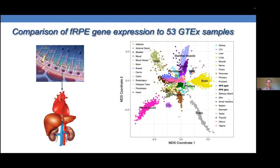Much to my surprise, the RPE falls between the brain and cardiac muscle. I wonder how many people would have predicted that. I think this is telling us something about the importance of mitochondrial electron transport to the RPE that I hadn't thought of before. Both brain neurons and cardiomyocytes are heavily dependent on oxidative phosphorylation. Looking at the literature with this new lens, I've seen examples of mutations that in mice affect the RPE specifically — not the photoreceptors — and also the heart.